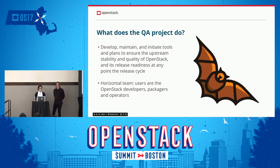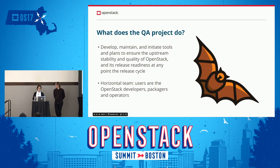The QA project is a horizontal team, like a doc team or something. And users are OpenStack developers, packagers, and operators — not normal end users.